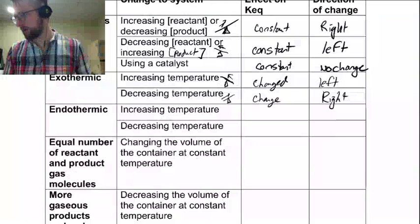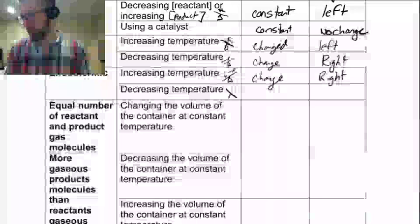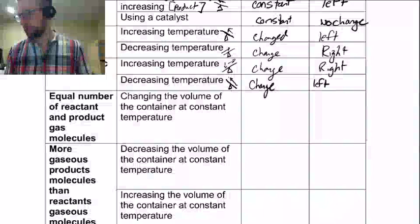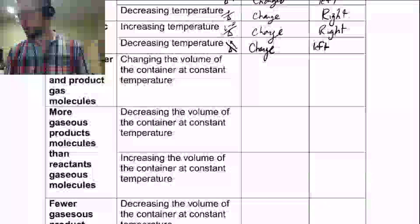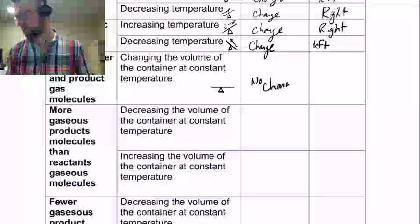For endothermic reactions: increasing temperature means you're going to be increasing the product side because you're applying stress there, so we're going to shift to the right — and that's going to change Keq. Decreasing the temperature means that you have less product, so we need to shift backwards to match — shift left — and we have had a change in Keq. For an equal number of reactants and products for gas molecules, if you change the volume, you will have no effect.